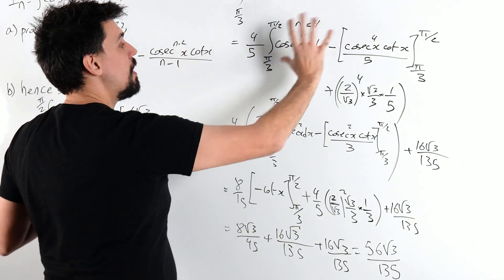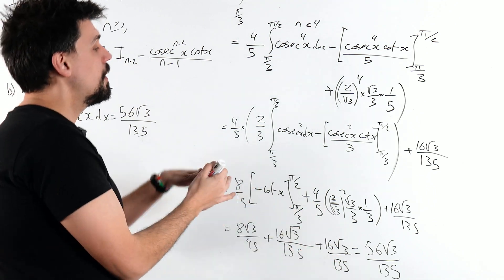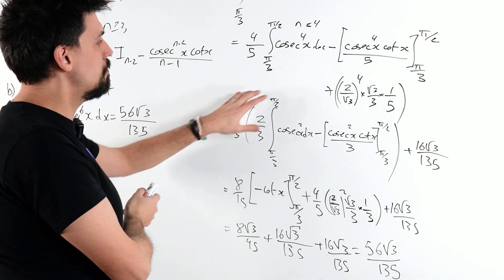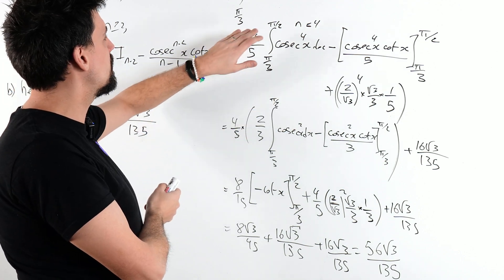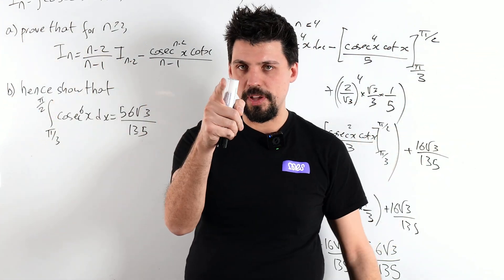And really the difficulty is keeping track of all these variables, keeping track of your pi over 2s. I pulled it off. The excessive use of brackets, making sure you've kept the 4 fifths there, and so on and so forth. I believe in you. You can do it.